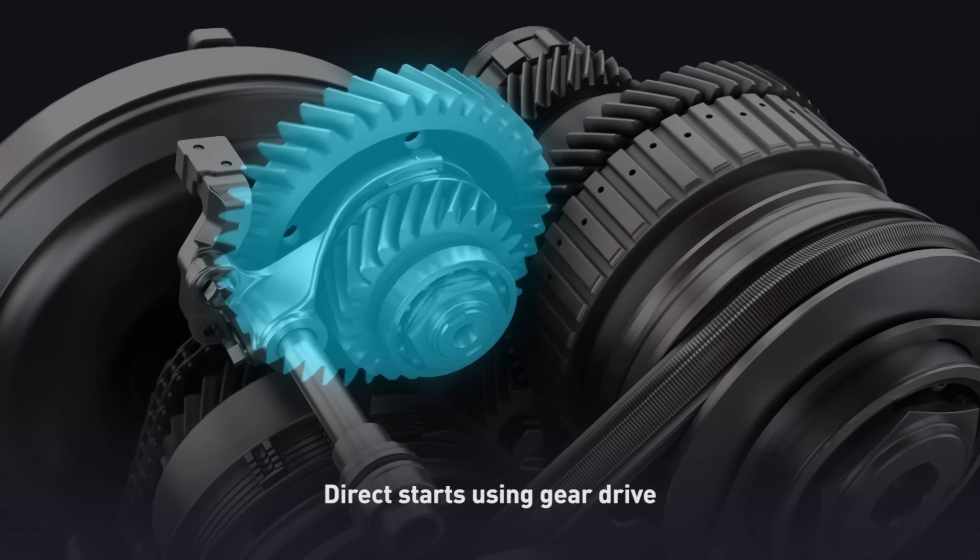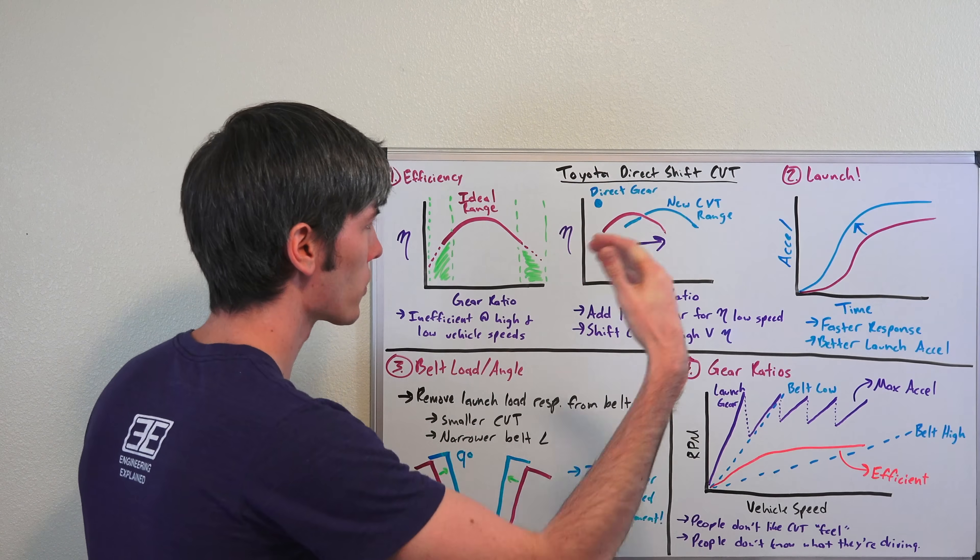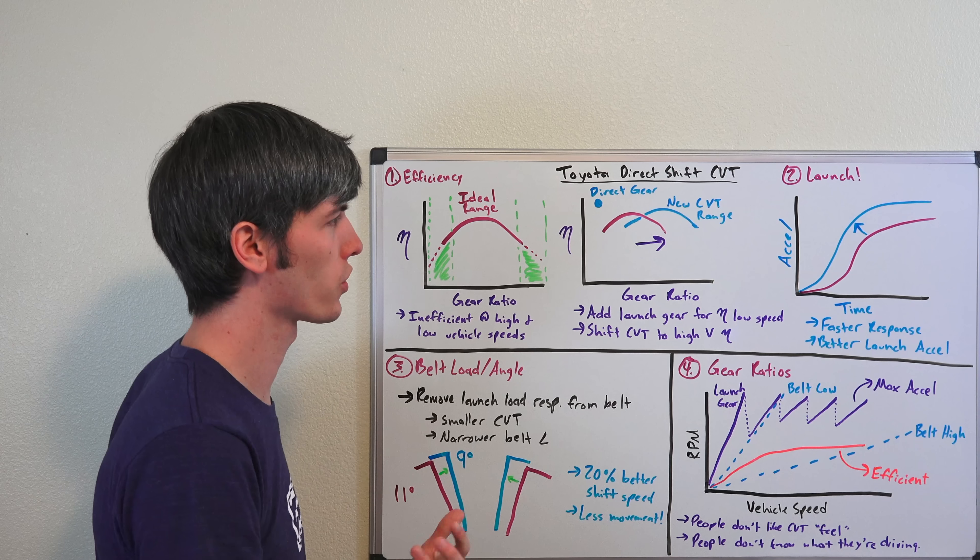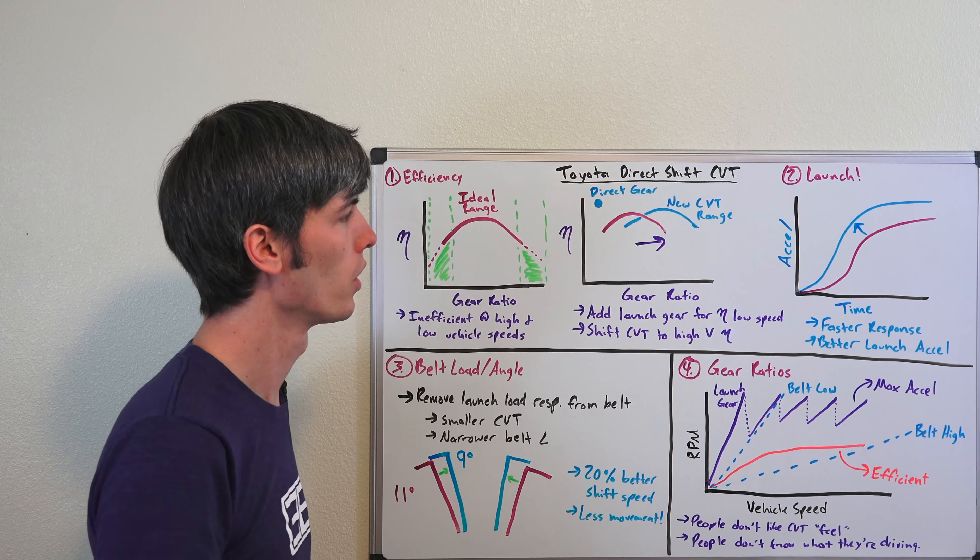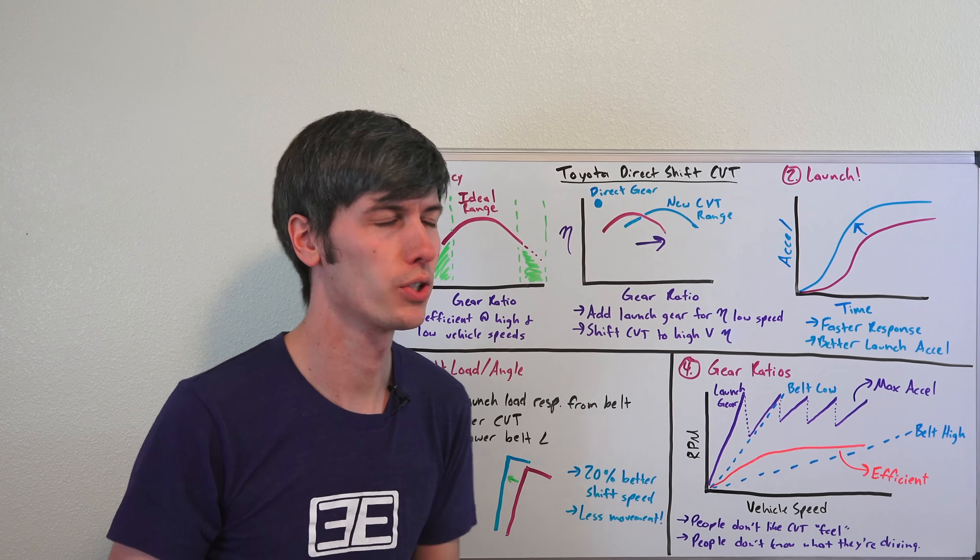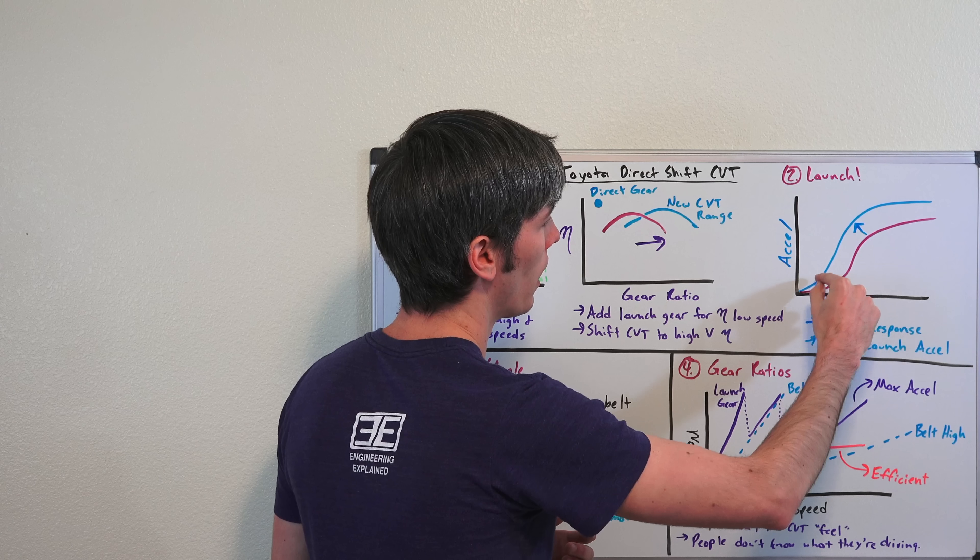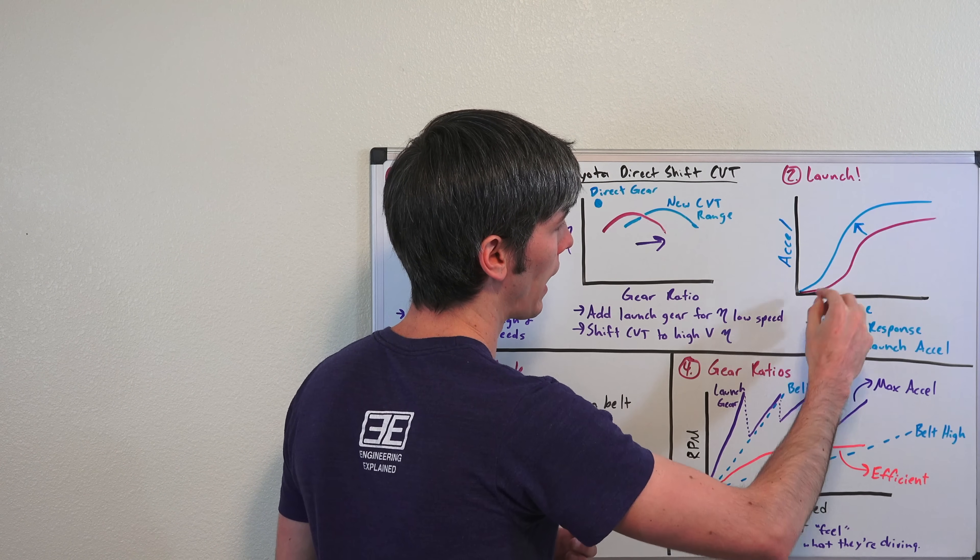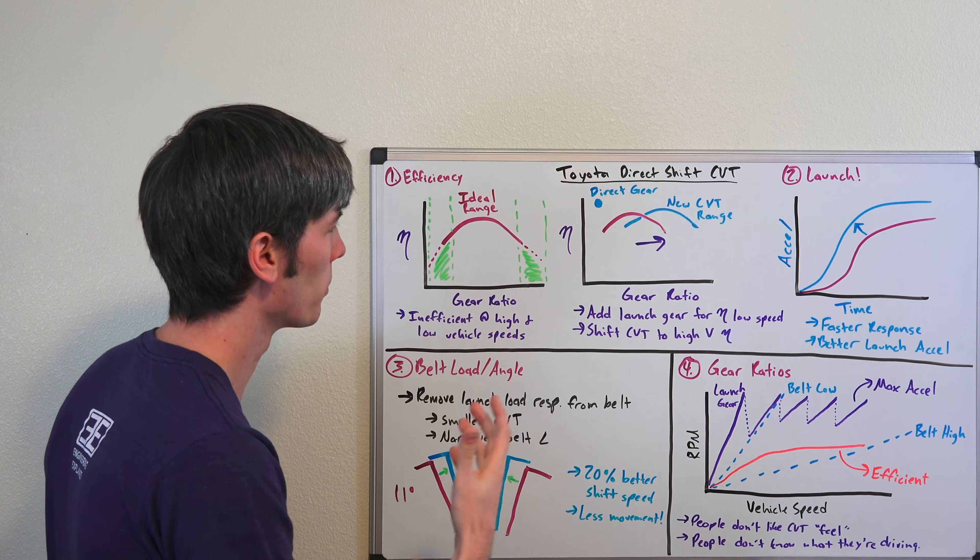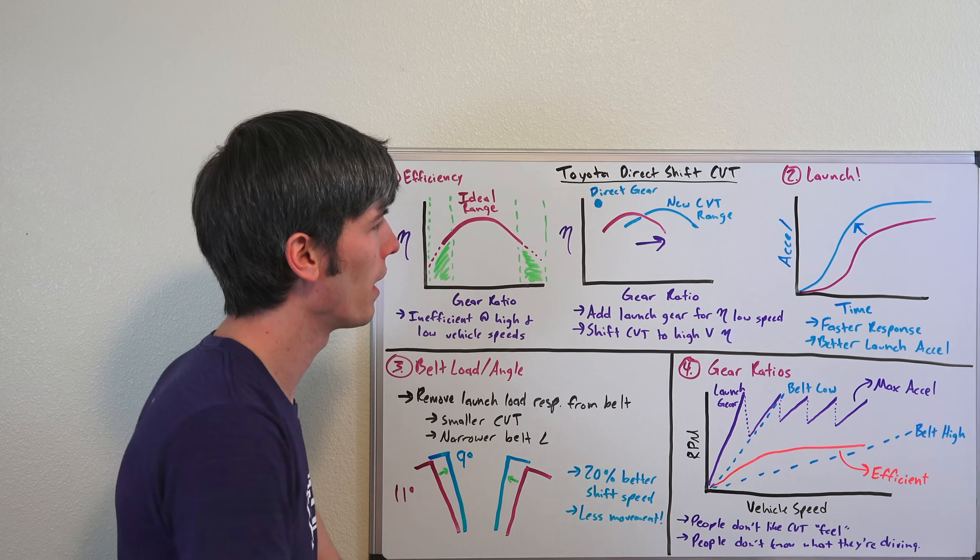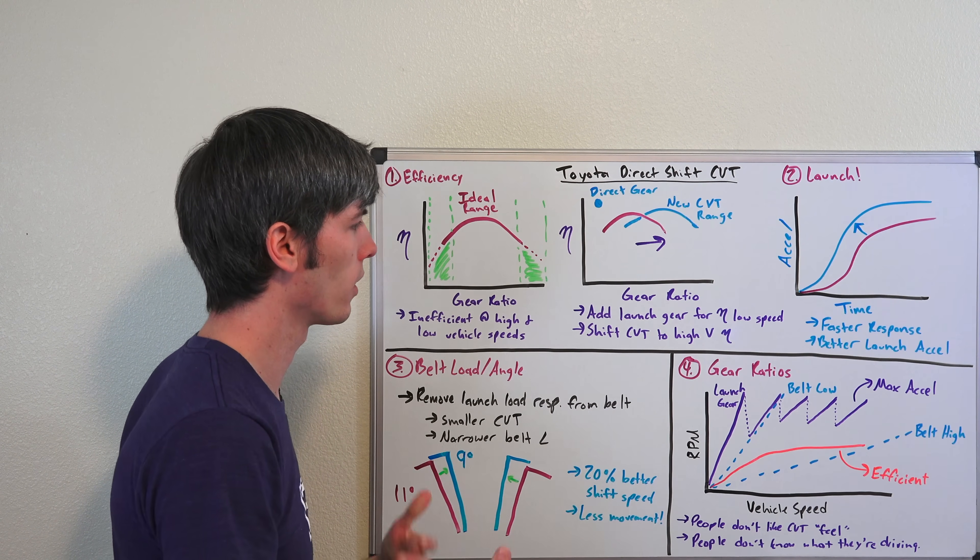So you've got a launch gear for low speed efficiency, and you've got a CVT for high speed transmission efficiency. And there actually is a performance benefit to this. So when you're accelerating from a stop, by having that more aggressive direct gear ratio, you actually get a better response and better launch acceleration. So just showing a simple curve here, acceleration versus time, a little bit greater acceleration, and that response comes a bit sooner by using a direct gear rather than a CVT. Some people don't like the kind of spongy response that CVTs have, which is kind of eliminated through the use of this direct gear from starts.